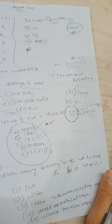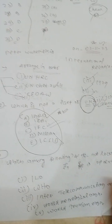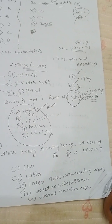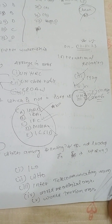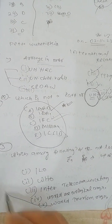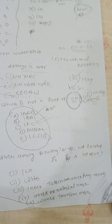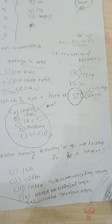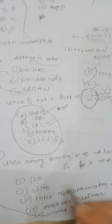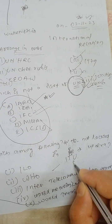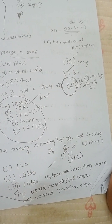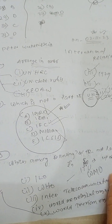The next question asks which among the following is not located in Geneva. The International Labour Organization (ILO), the World Health Organization (WHO), the International Telecommunication Union (ITU), and the World Meteorological Organization (WMO) are all located in Geneva. However, the World Tourism Organization is not located in Geneva. That is the answer.